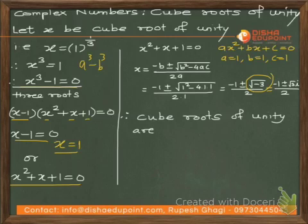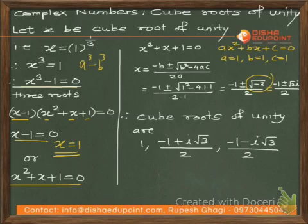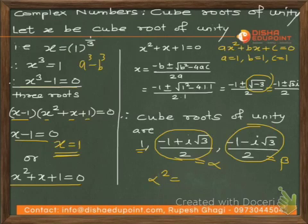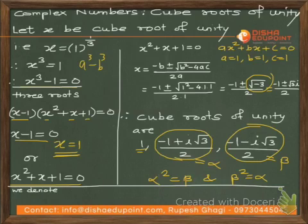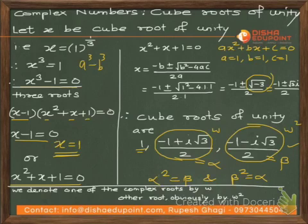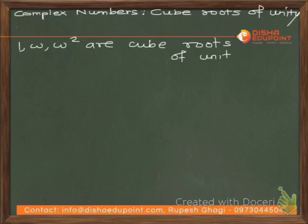The three cube roots of unity are: x = 1, x = (-1 + i√3)/2, and x = (-1 - i√3)/2. The first is the real root, and the other two are complex cube roots. We observe that if one complex root is α, then α² equals the other root β, and vice versa. So we denote any one complex root as ω, and the other becomes ω². Thus the cube roots of unity are 1, ω, and ω².